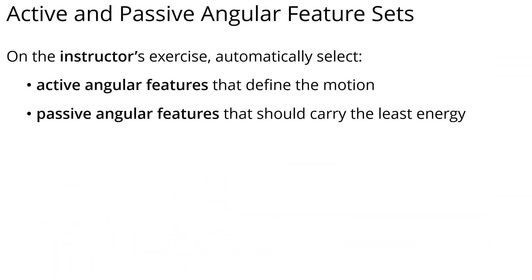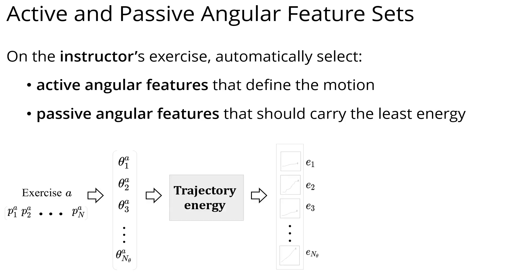Therefore, for each exercise type, we automatically select these two sets of angular features. Given an exercise performed by the instructor, we compute the angular features across the sequence of 3D skeletons, integrate their values as a measure of energy, and partition them into two sets, active and passive angles.